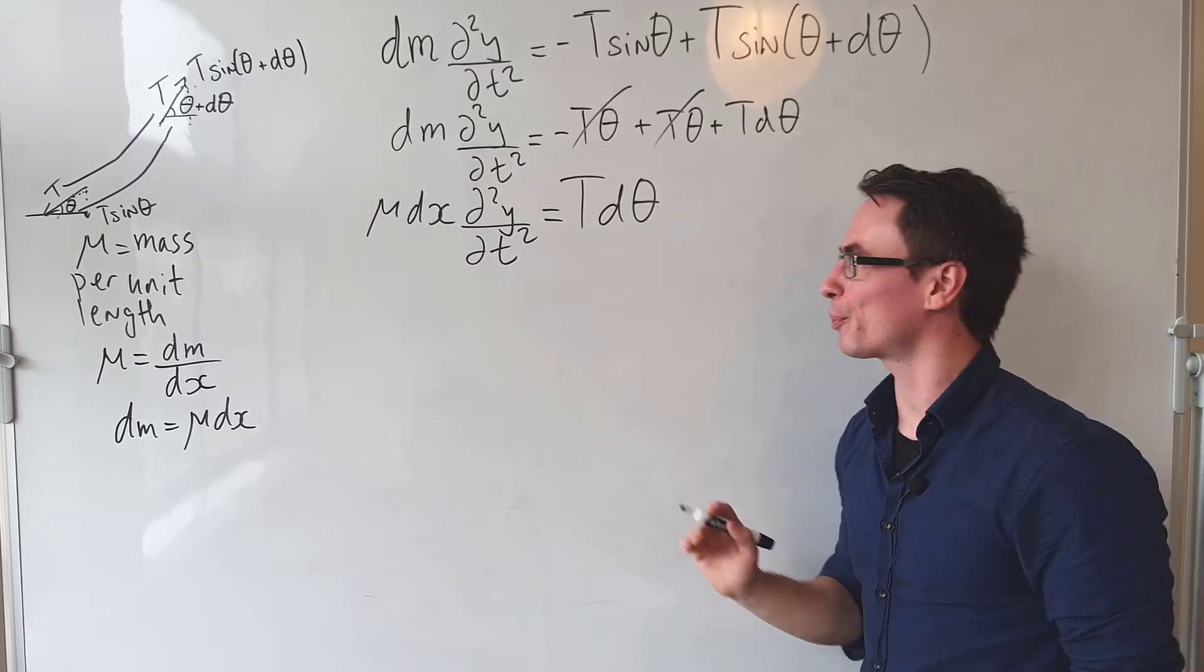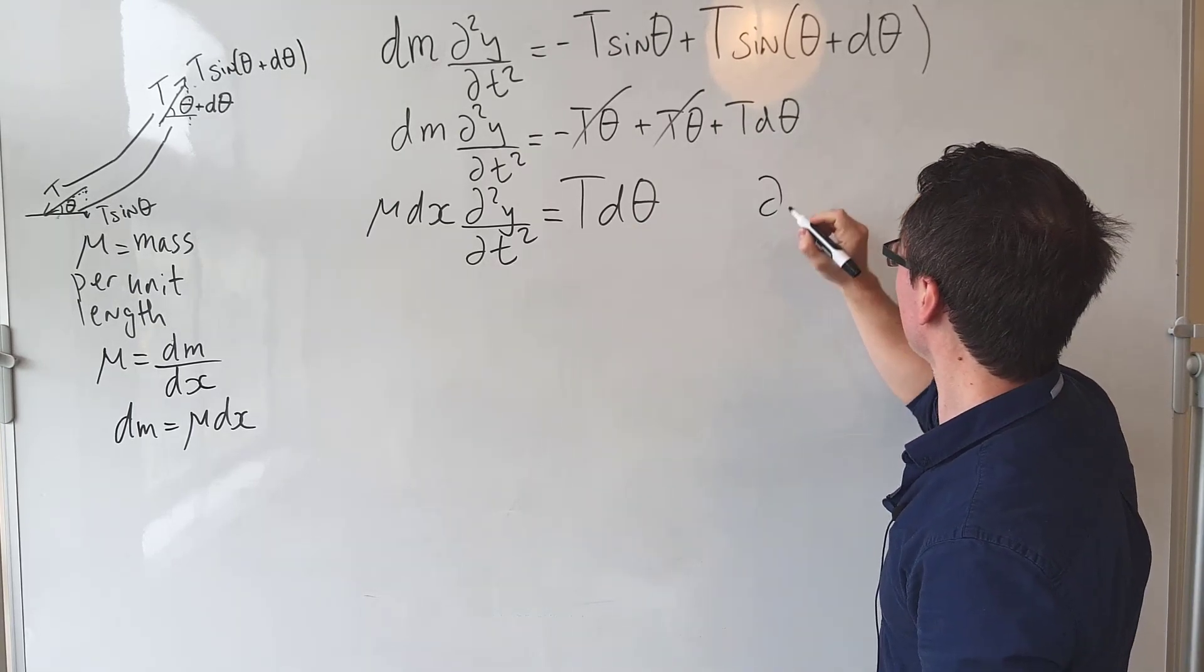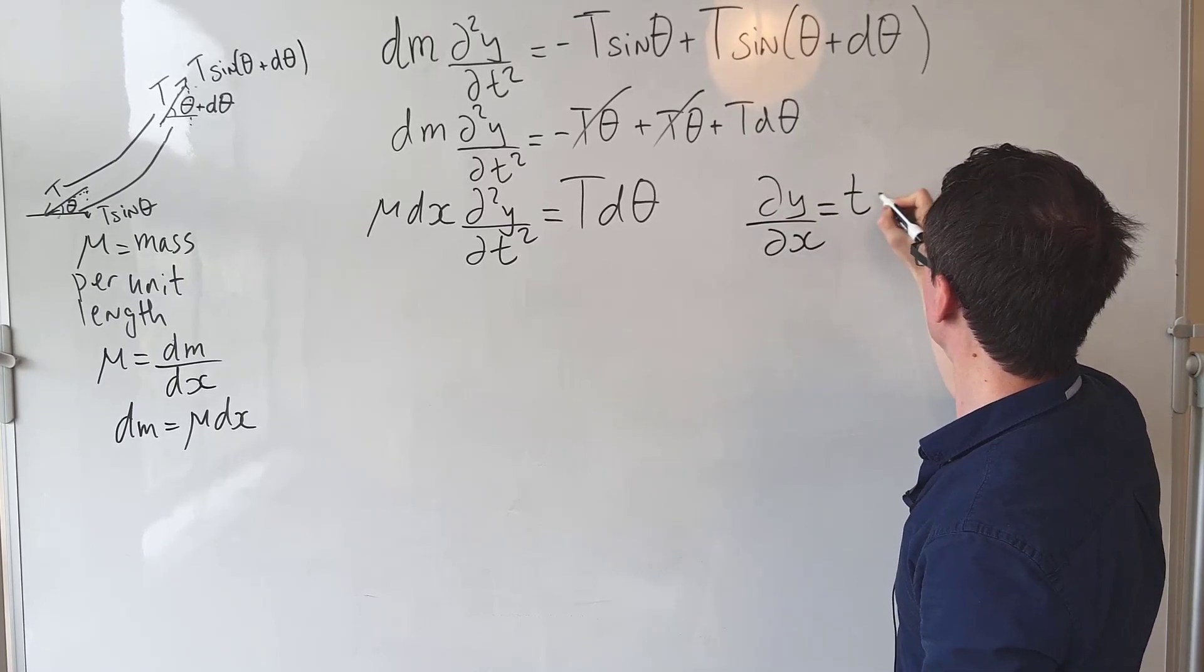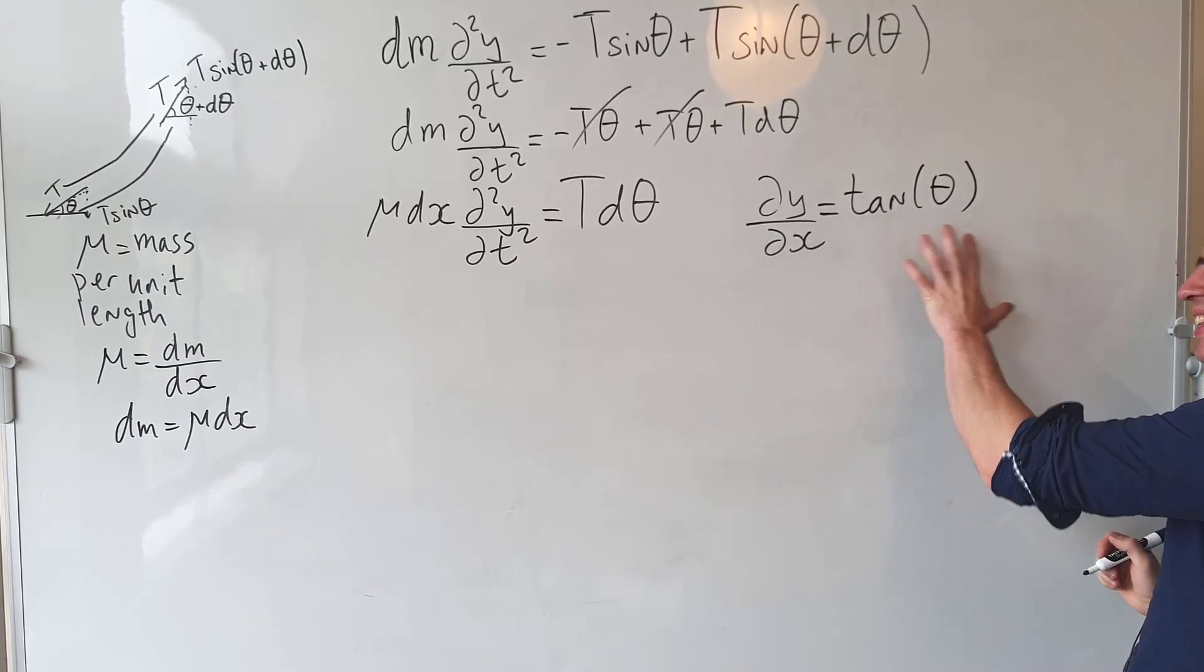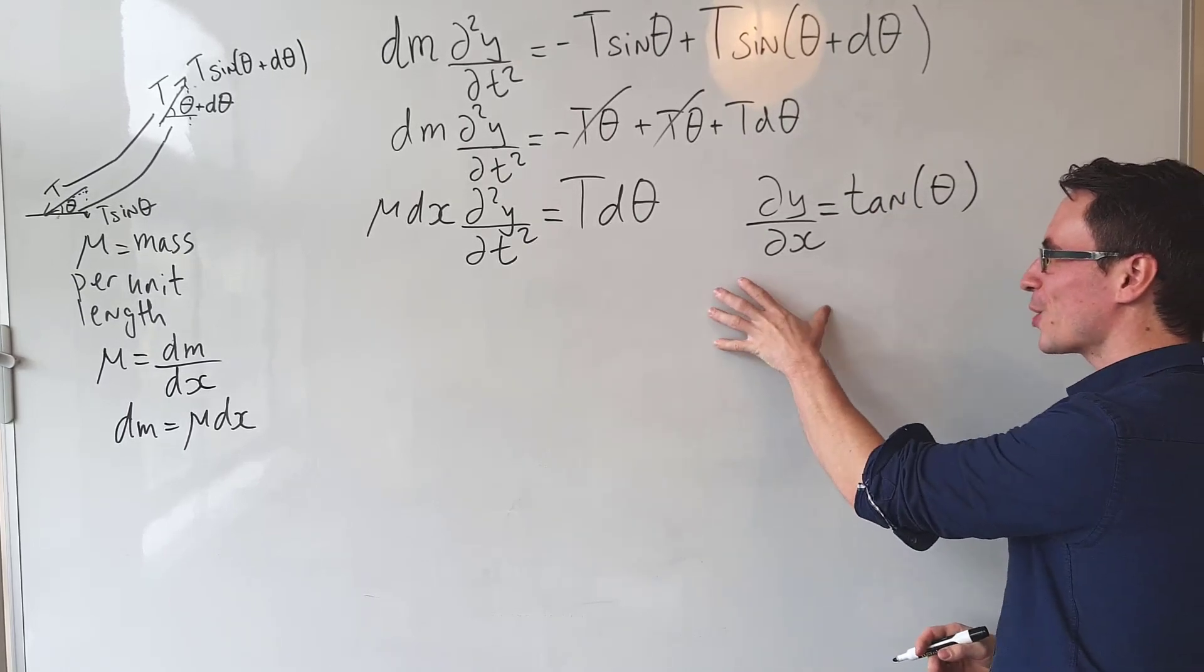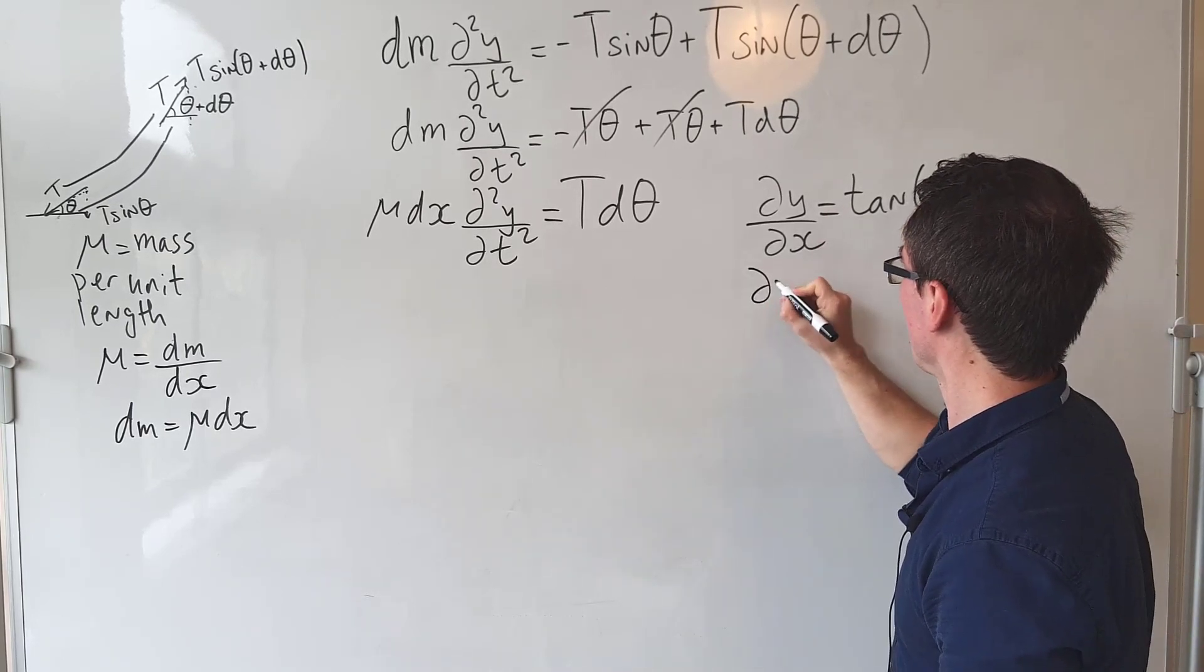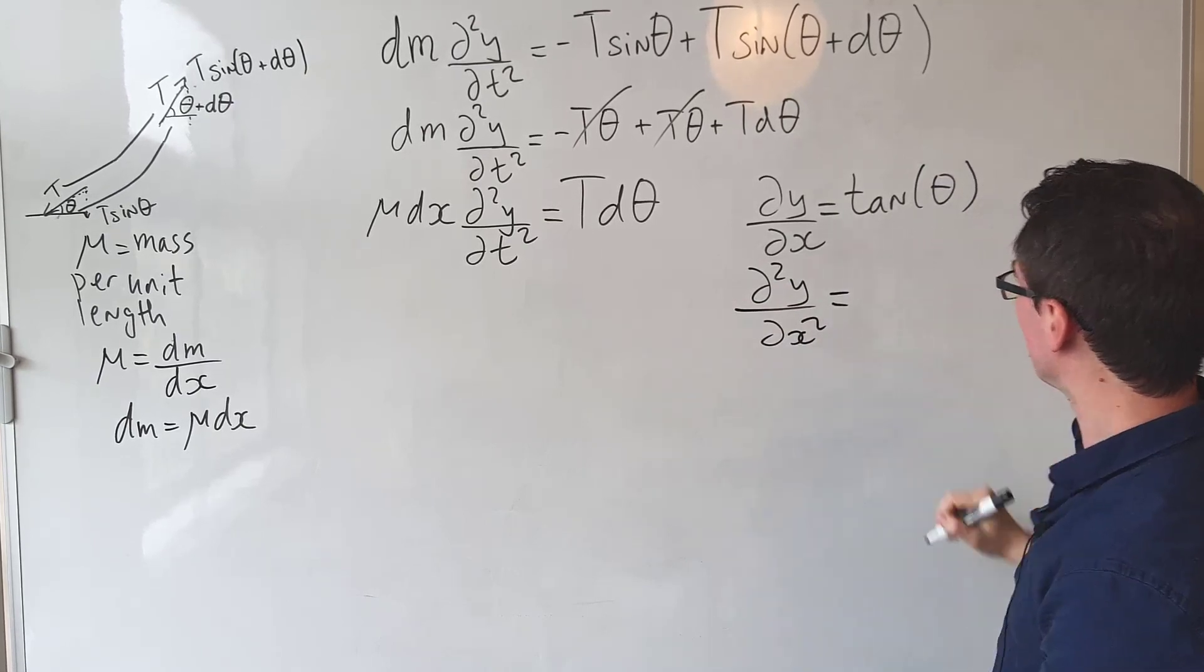How do we find an expression for this angle? Well, using some simple trigonometry, we can just say that dy/dx equals tan theta. This is still not d theta though, so what I'm going to do is differentiate this with respect to x, and what we're going to find is that the second derivative with respect to x will be equal to the derivative of tan, which is 1/cos².